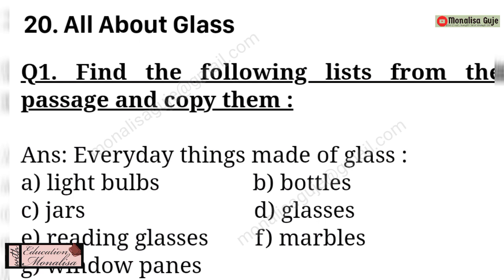Question 1: Find the following list from the passage and copy them. First is everyday things made of glass. The answer for everyday things made from glass in the passage is: light bulbs, jars, reading glasses, window panes, bottles, glasses and marbles. You can write them one below the other, or one in front of the other, or just give commas.